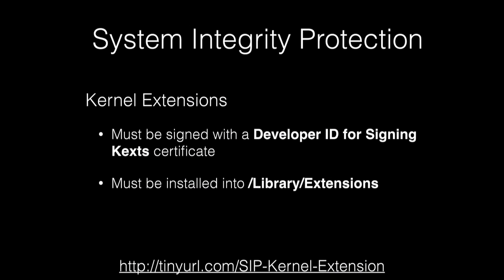SIP also blocks installation of unsigned kernel extensions. In order to install a kernel extension with SIP enabled, a kernel extension must be signed with the Developer ID for signing KEXTs certificate — a special Developer ID certificate that Apple is reluctant to hand out — and it must be installed into /Library/Extensions. More information is available in Apple's developer documentation for SIP.